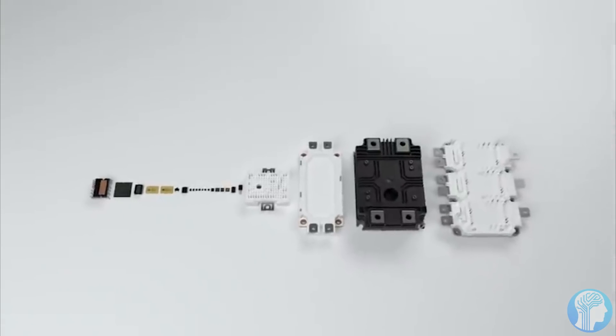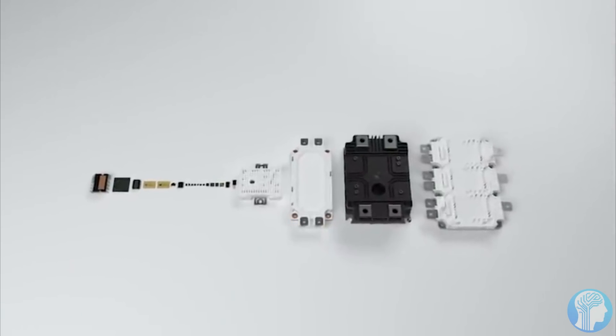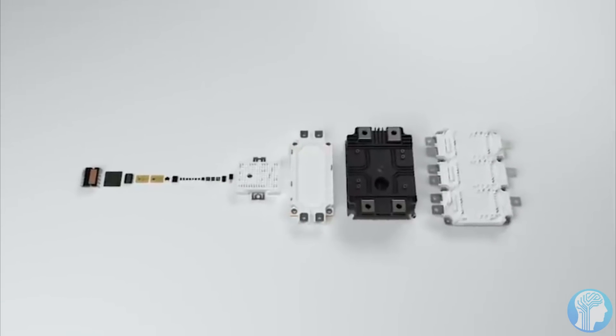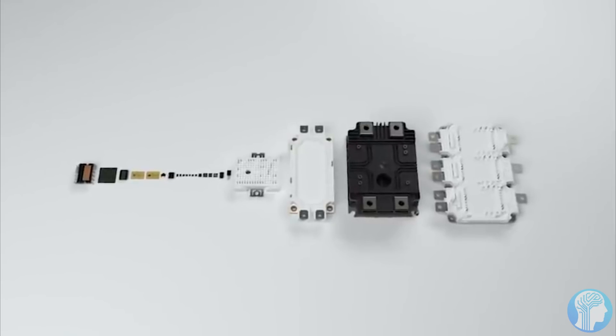The company claims that its Blade system, which contains 16 Envise chips in a 4U server configuration, uses only 3 kW of power and boasts three times higher inferences per second than the NVIDIA DGX A100 with seven times the inferences per second watt on BERT base with the squad dataset.